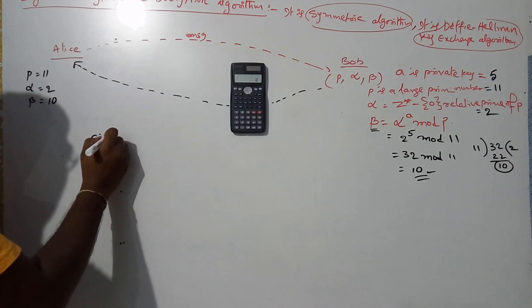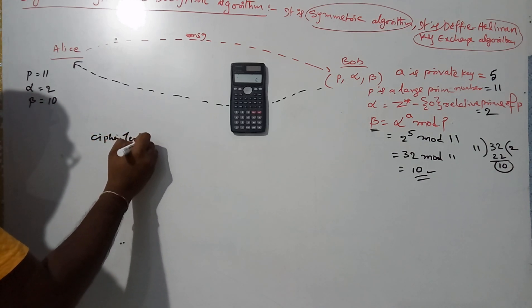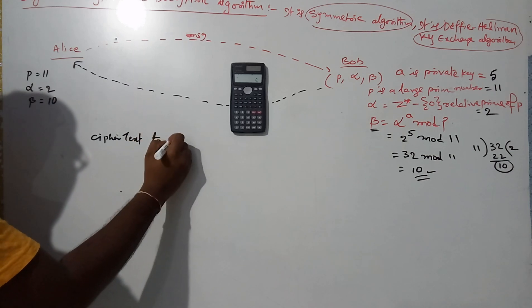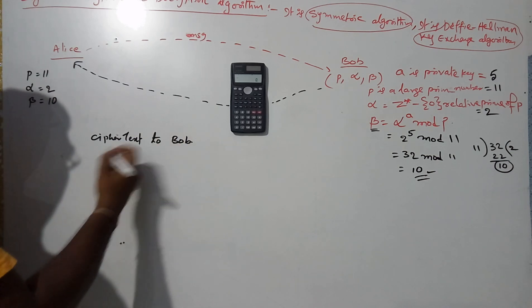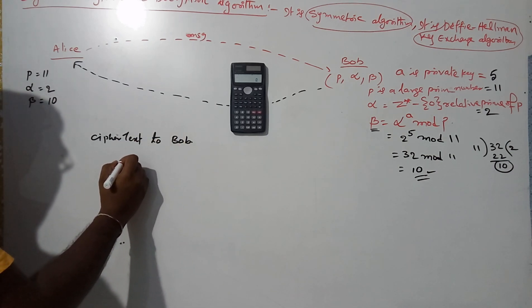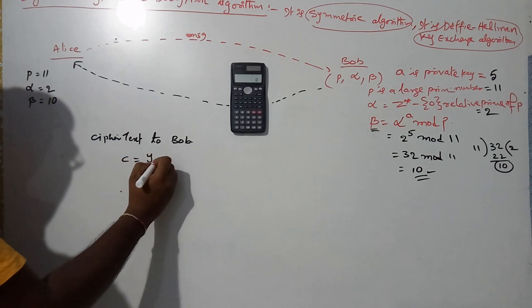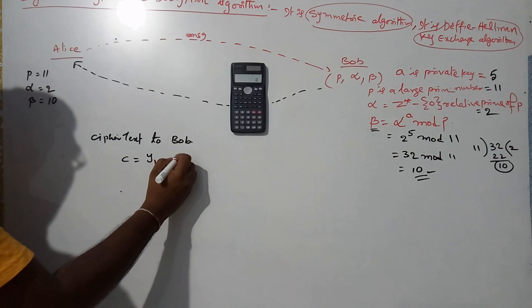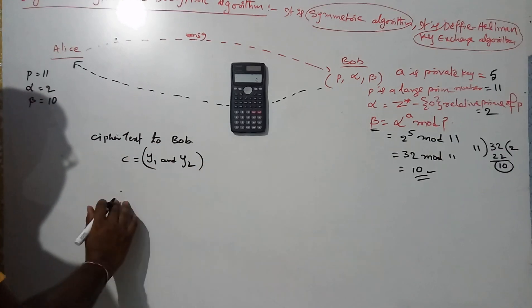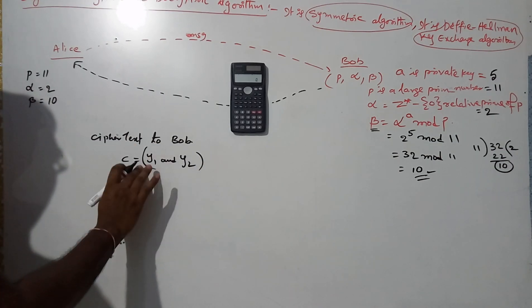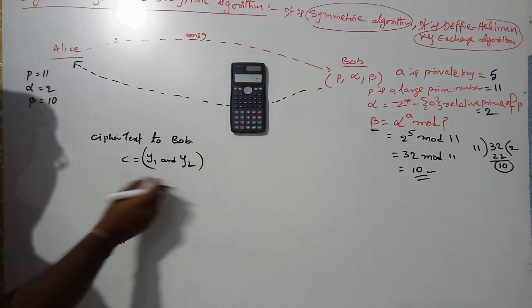The ciphertext is a combination of y1 and y2. The ciphertext is divided into two parts. Suppose x is the plaintext.